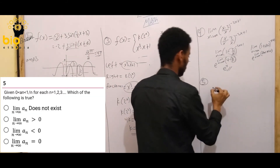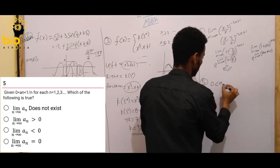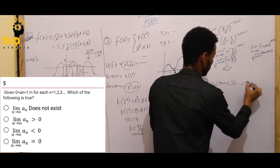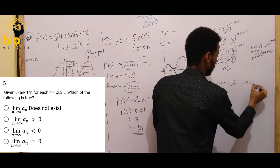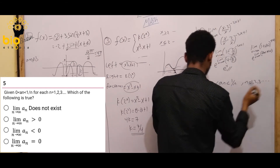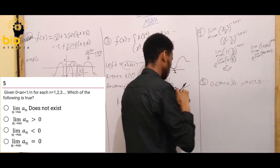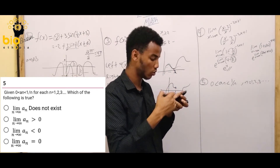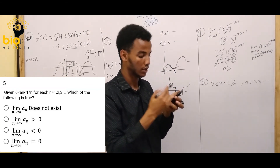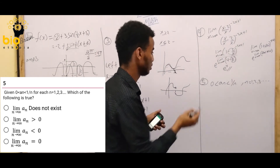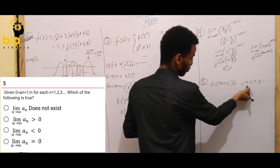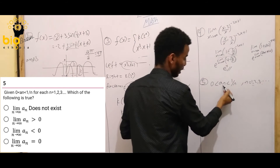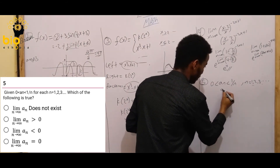Given that 0 is less than aₙ which is less than 1 over n, for n equals 1, 2, 3 — natural numbers — find the limit as n goes to infinity. Does the limit exist? We know a₁ and the sequence values.